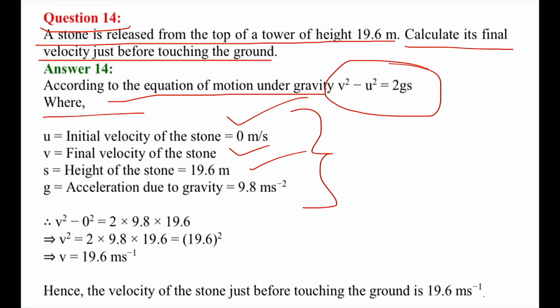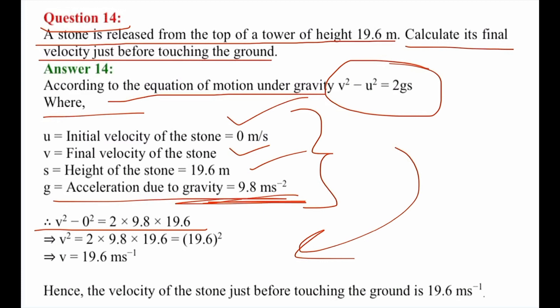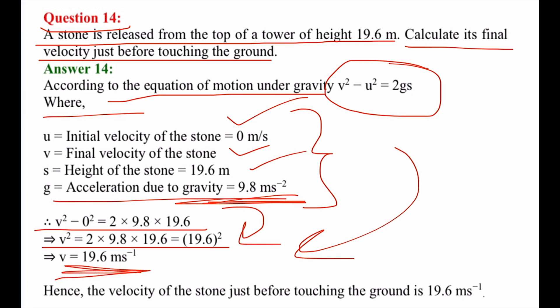The initial velocity is 0 meters per second since the stone is released from rest. V is the final velocity of the stone, S is the height of 19.6 meters, and G is acceleration due to gravity equal to 9.8 meters per second squared. Put the values: 2 into 9.8 into 19.6 — it is easy to calculate yourself.